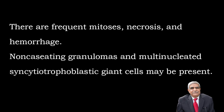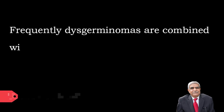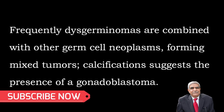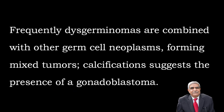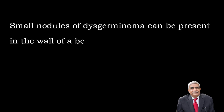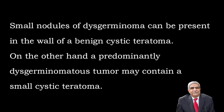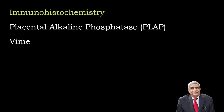Non-caseating granulomata, multi-nucleated giant cells, and syncytiotrophoblastic giant cells may be present. Frequently dysgerminomas combine with other germ cell tumors forming mixed germ cell tumors. Calcification when present suggests the presence of a gonadoblastoma. Small nodules of dysgerminoma may be present in the wall of an otherwise benign cystic teratoma, or conversely, a predominantly dysgerminomatous tumor may contain a small cystic teratoma.